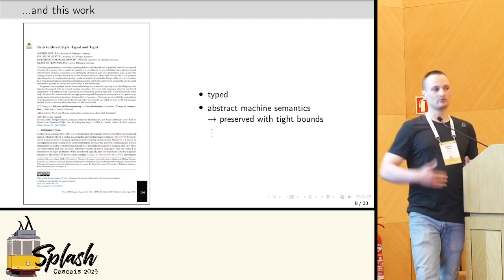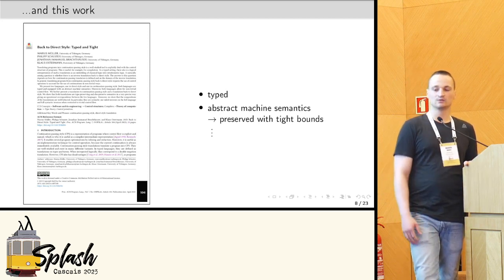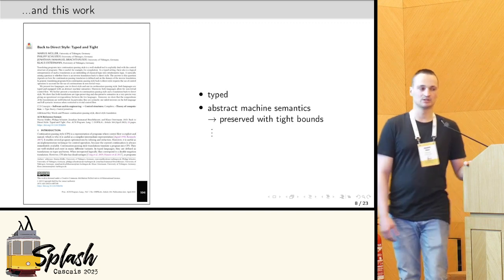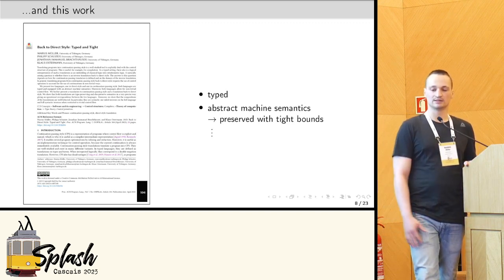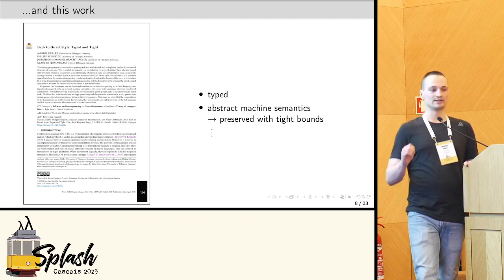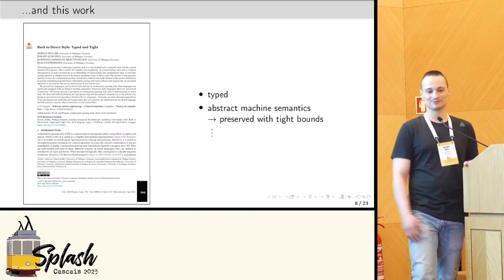But our paper is more closely related to the original direct style papers. In contrast to them, we work in a type setting, and we consider an abstract machine semantics, and actually we prove that the machine semantics is preserved by the translations of very tight bounds, which is why the paper is called back to direct style, tight and tight.